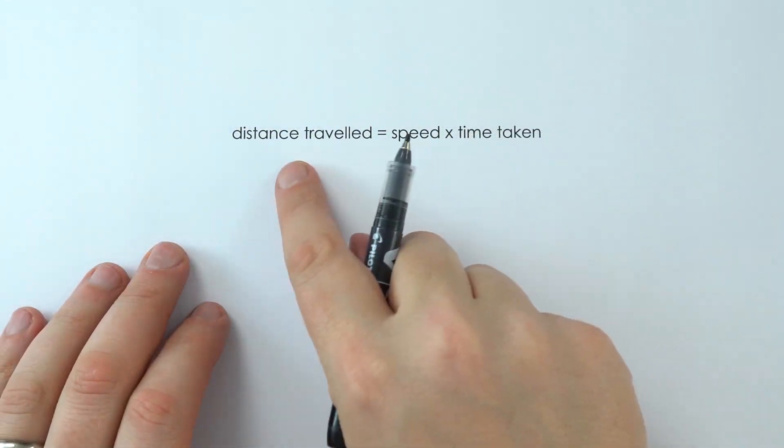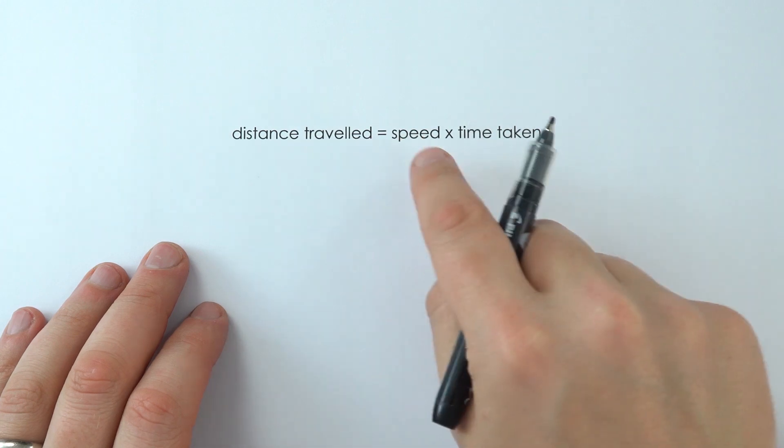In physics, speed is a really interesting topic and it comes up all the time. The speed of an object is a measure of how quickly its distance is changing per second. Therefore, if you wanted to calculate the average speed of something, we need to look at the total distance it's traveled and the time it's taken to do that. There's a really good equation that will come up all the time that you just have to remember — linking distance traveled, the speed of an object, and how long that's taken.